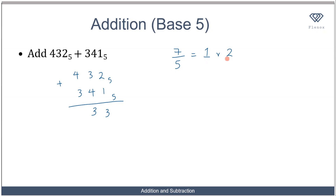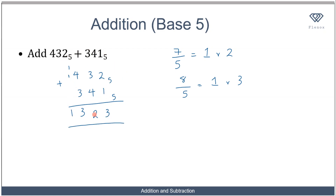So 7 divided by 5 is 1 remainder 2. Write 2, carry 1. Then 4 plus 3 plus 1 is 8 — greater than 4, so divide by 5: that's 1 remainder 3. Write 3, carry 1. There's nothing at the next place value, so bring the 1 down. Adding these two numbers in base five gives 1323 in base five. None of the digits exceeds 4, as required by base five.